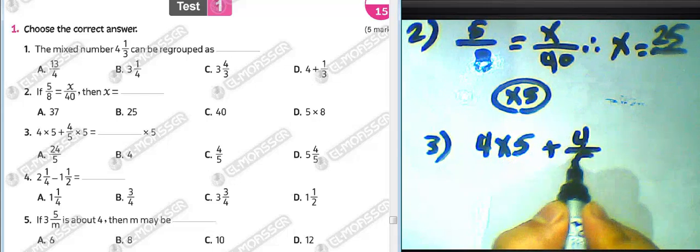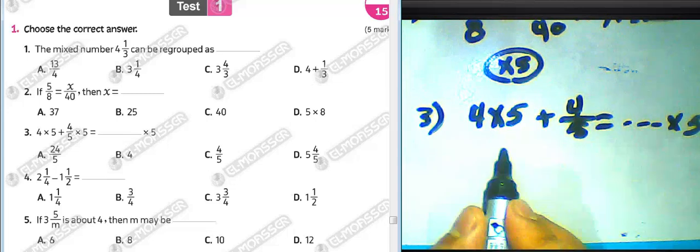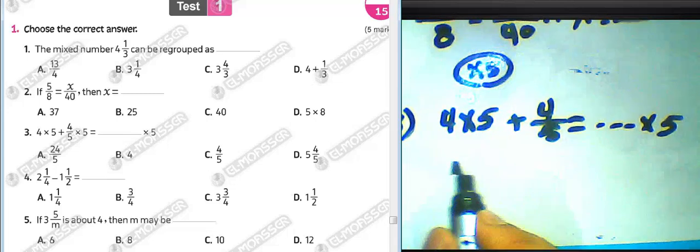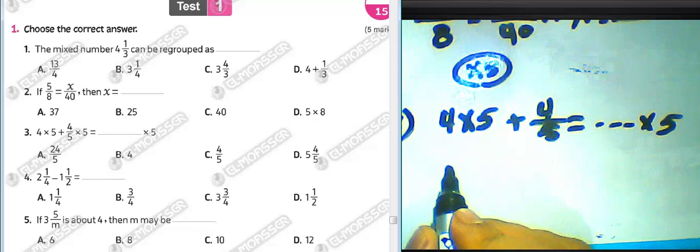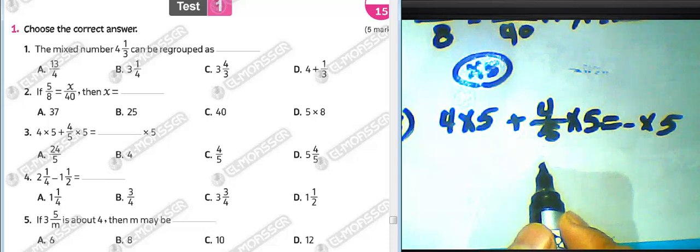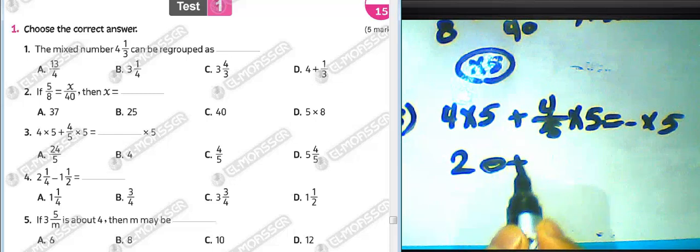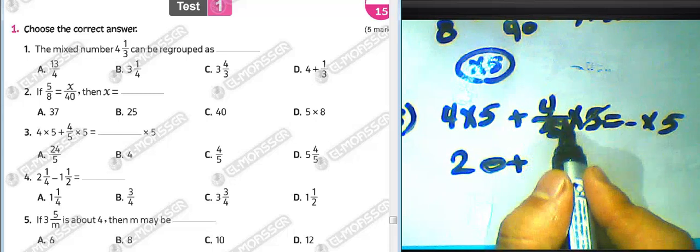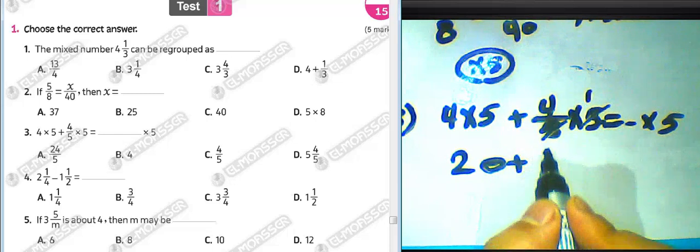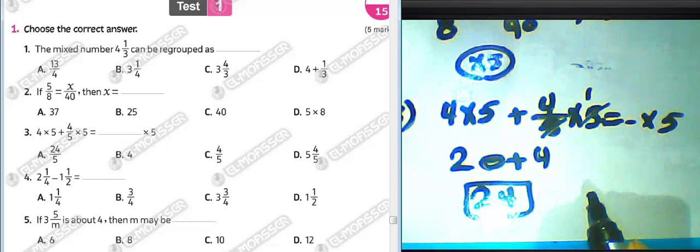Question number three: four multiplied by five plus four over five, all multiplied by five equals what? We must find the result. Four times five equals twenty, and four over five times five — we can cancel five by five to get one, so one times four equals four. The result will be twenty plus four, which equals twenty-four.